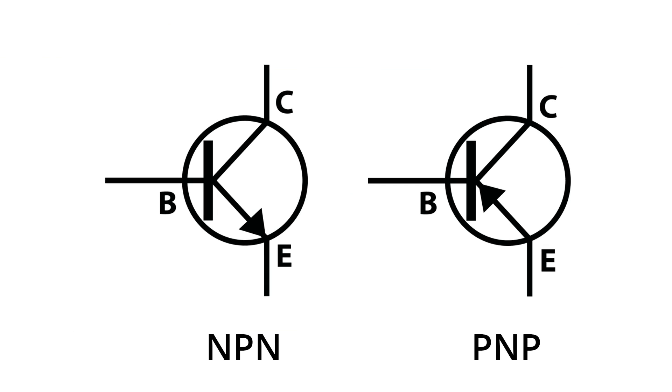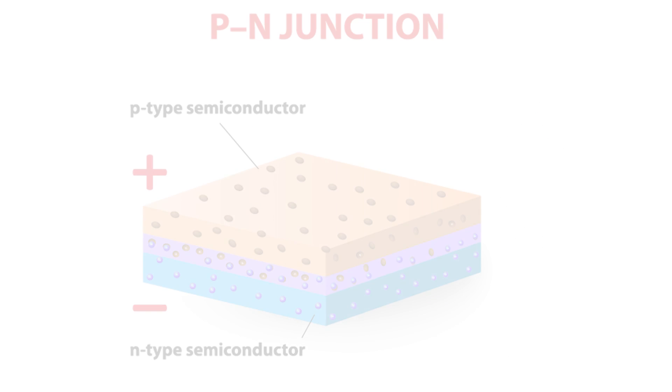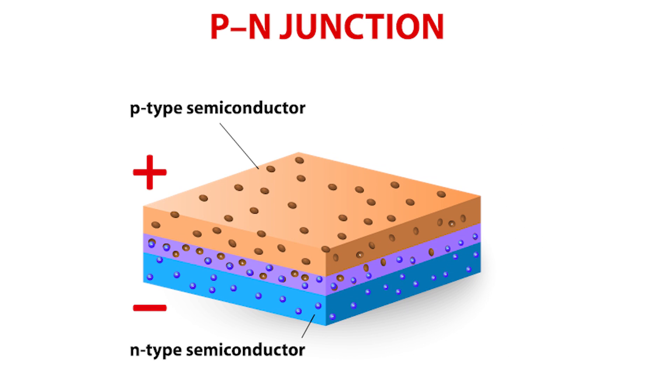In the P-type region, there are holes from the acceptor impurities, and in the N-type region, there are extra electrons.